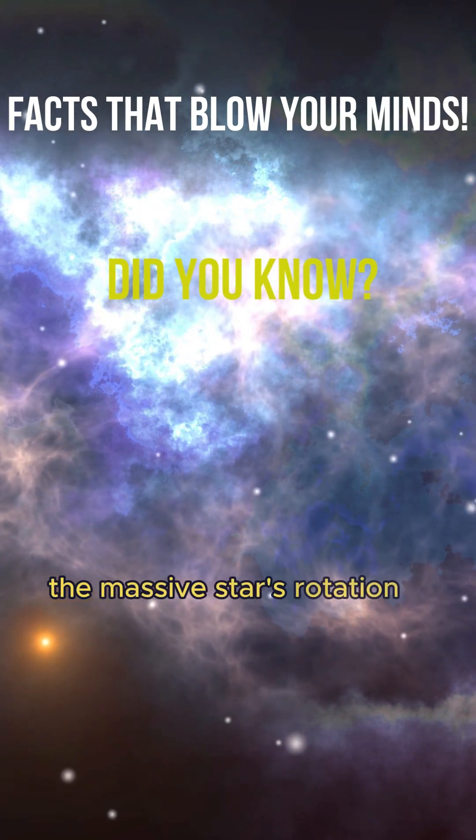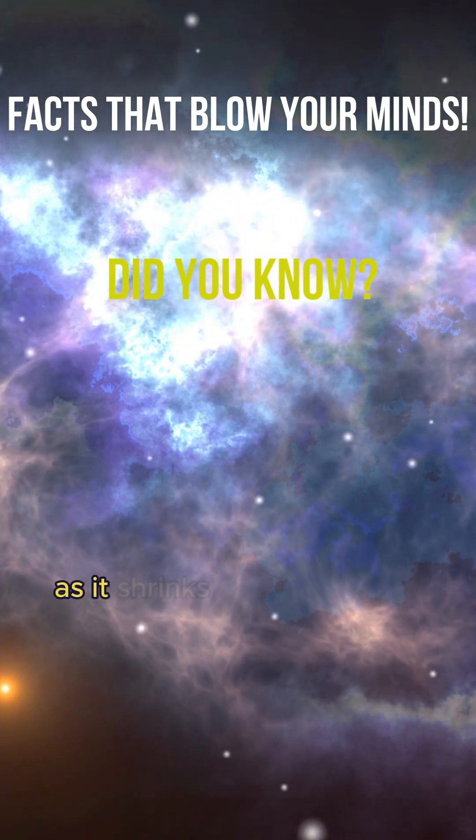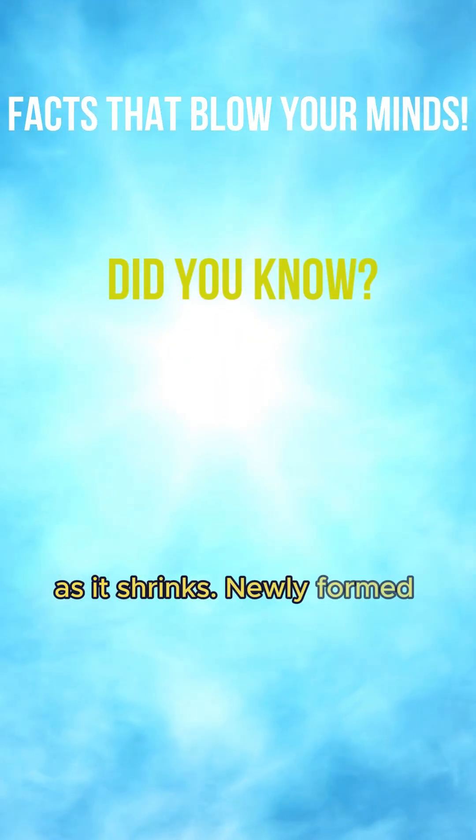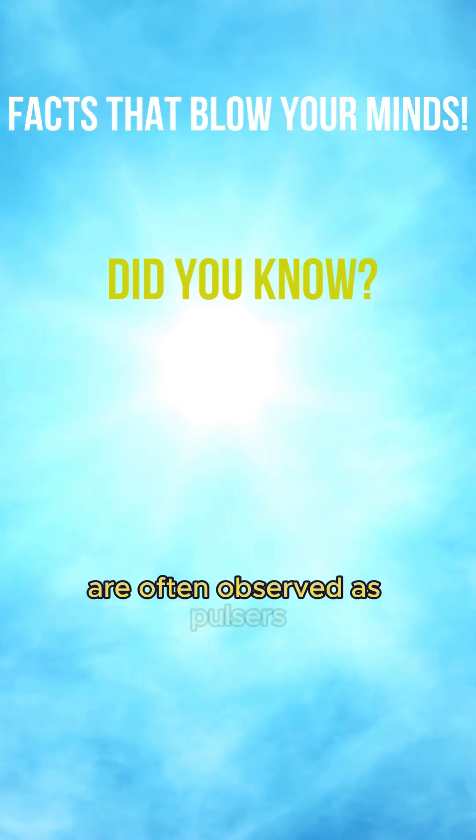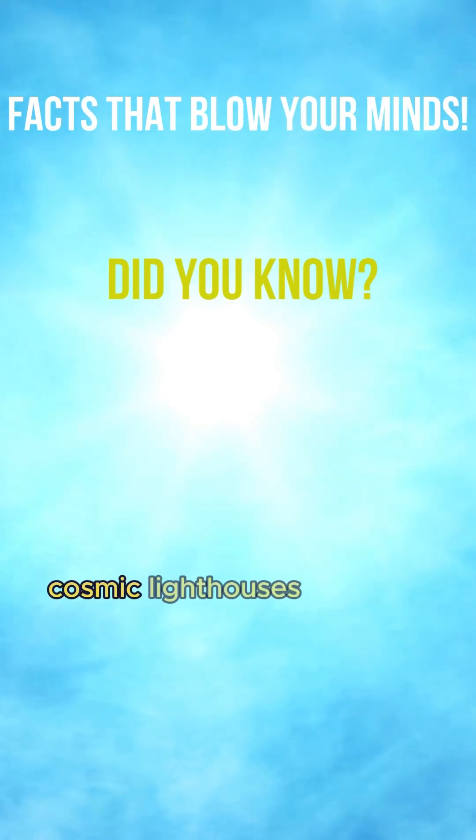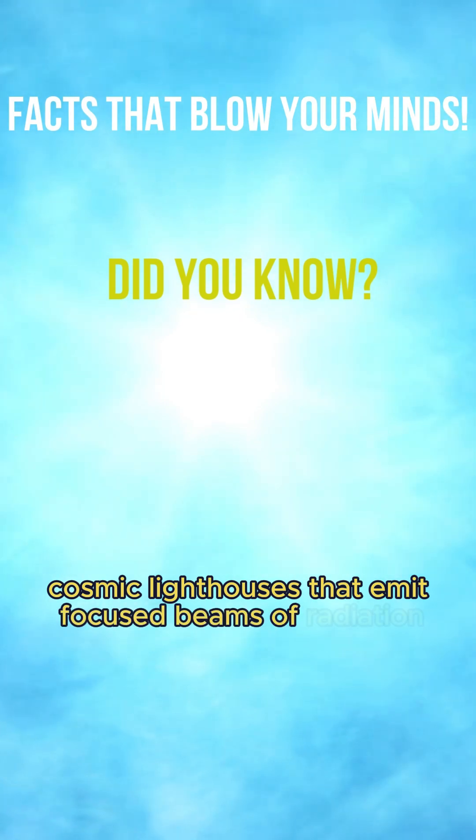Newly formed neutron stars can spin hundreds of times per second. The fastest known rotates over 700 times per second. These rapidly spinning stars are often observed as pulsars, cosmic lighthouses that emit focused beams of radiation.